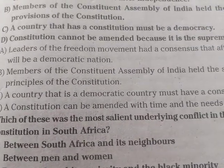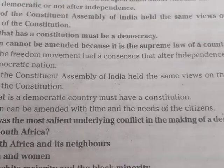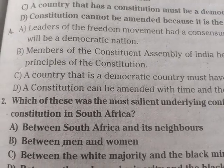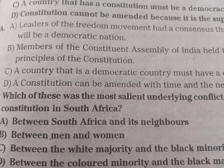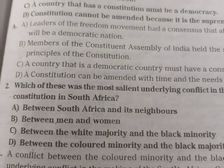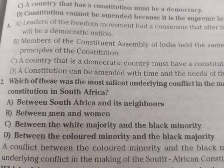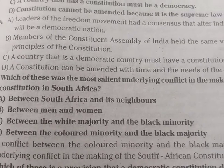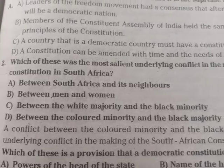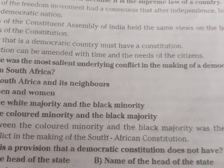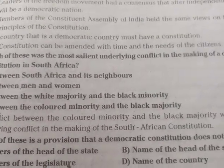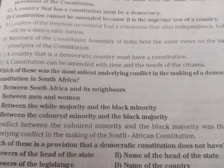Question: Which of these was the most salient underlying conflict in the making of a democratic constitution in South Africa? A. Between South Africa and its neighbors. B. Between men and women. C. Between the white majority and the black majority. D. Between the colored majority and the black majority. Answer: The conflict between the white minority and the black majority was the most underlying conflict in the making of the South African constitution.